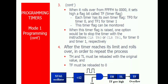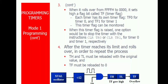Each timer has its own timer flag: TF0 for Timer 0 and TF1 for Timer 1. When the timer flag is set, one option is to stop the timer with the instruction CLR TR0 or CLR TR1. So we stop the timer when the timer flag bit is set. After the timer reaches its limit and rolls over, in order to repeat the process, the lower and higher timer registers must be reloaded with the original count value, and the timer flag bit must be reset to 0. In such a way, we can operate Mode 1 of the timer.